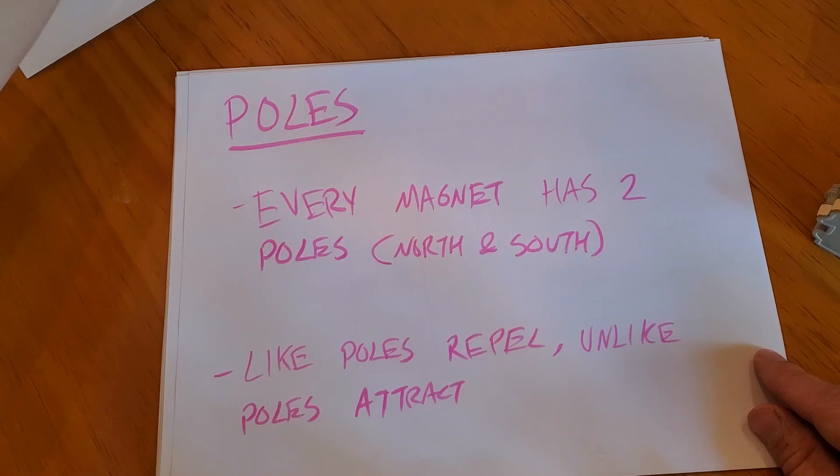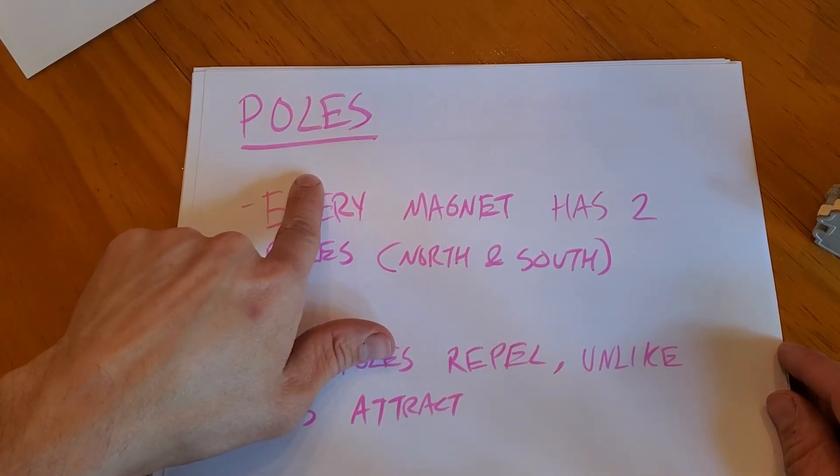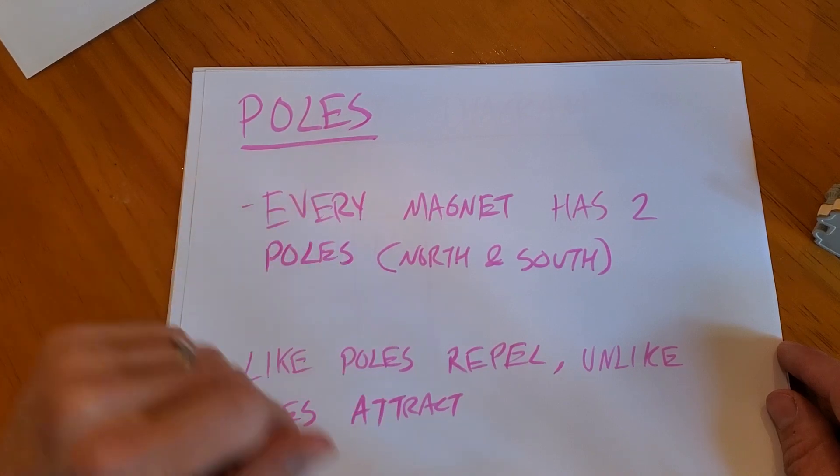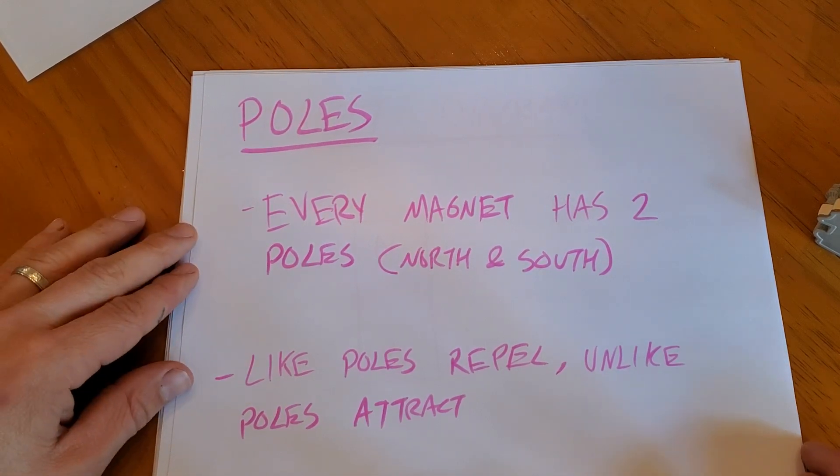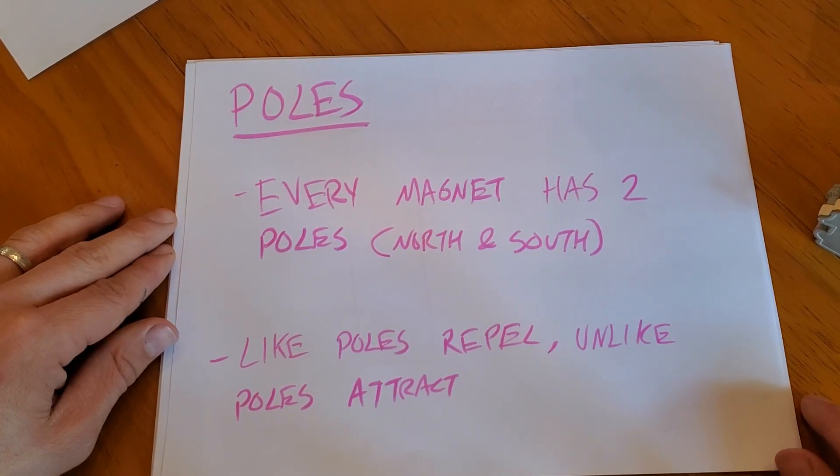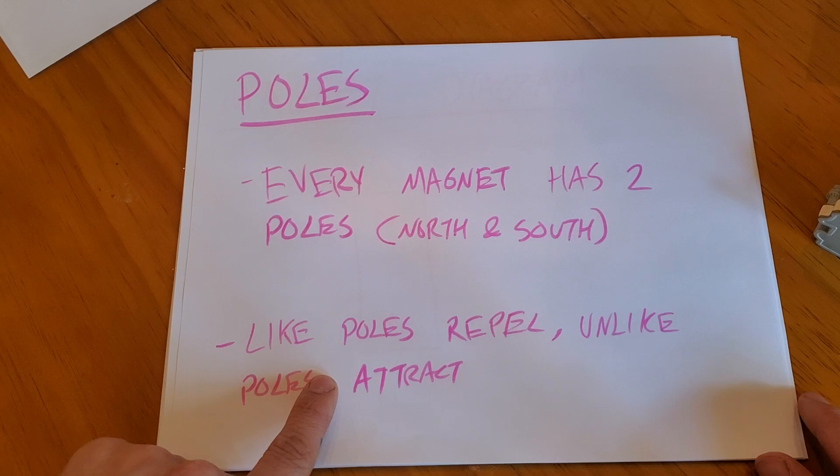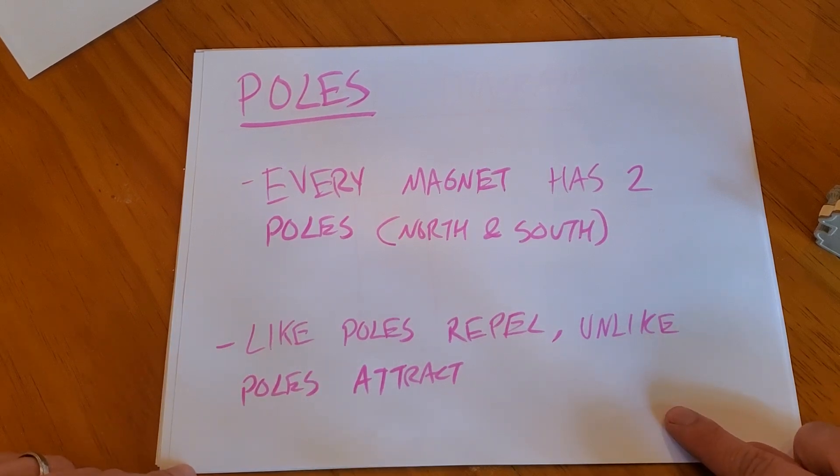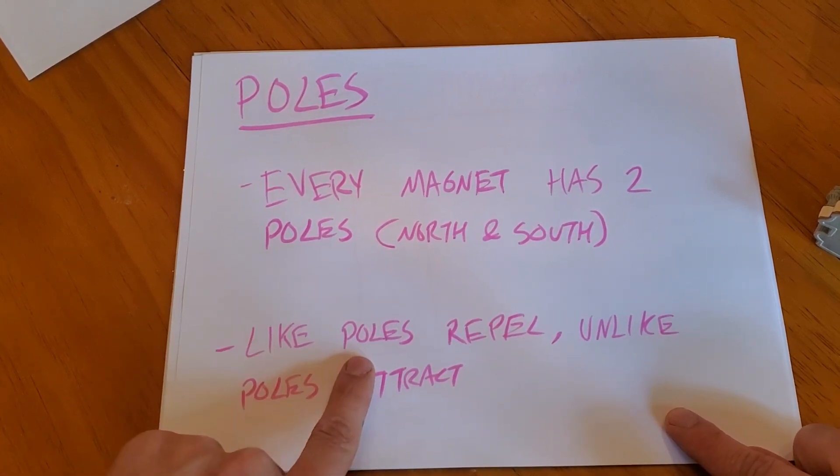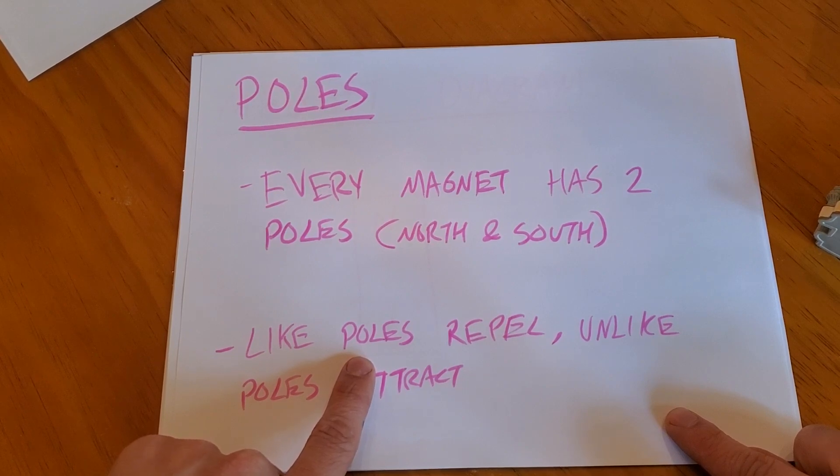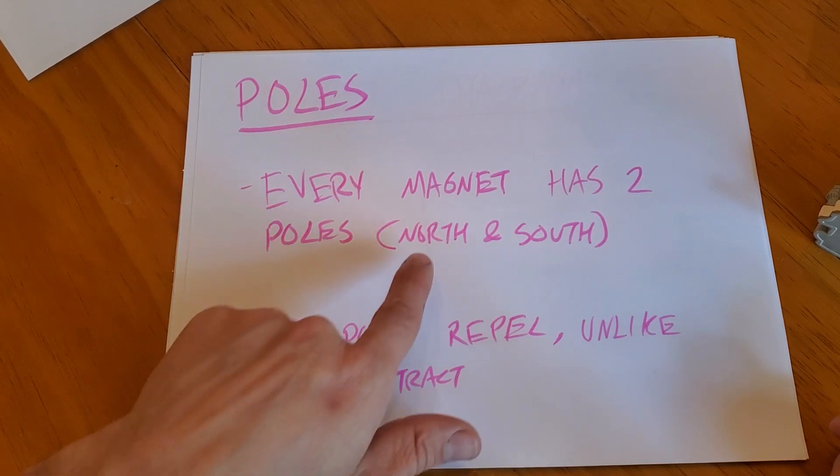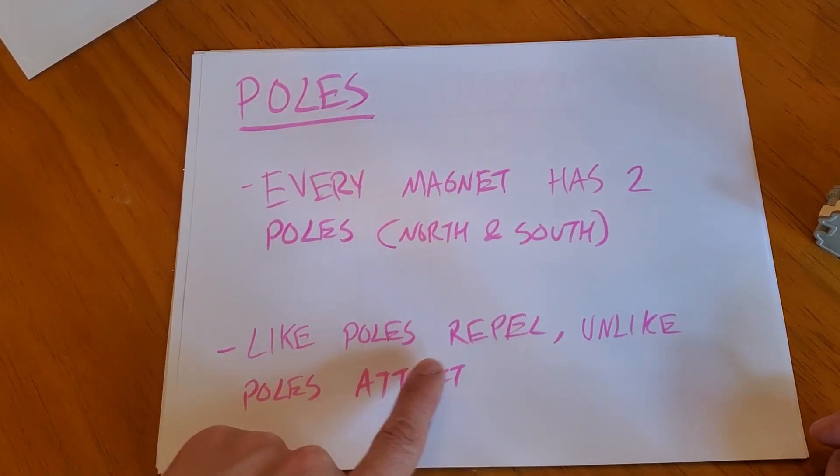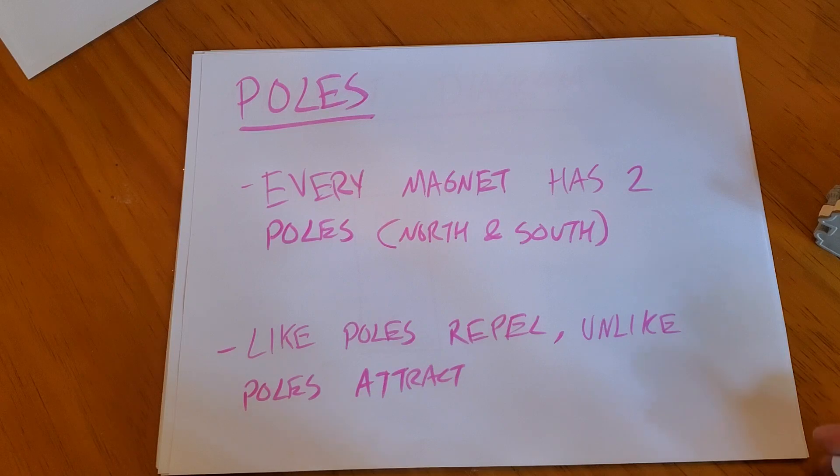Let's talk about what a magnet is and what makes it a magnet. Magnets have poles, like the poles of the earth, north pole and south pole. Every magnet has two poles, a north and a south. This is really similar to static and our electricity unit because like poles repel and unlike poles attract. That sounds very similar to like charges repelling, opposite charges attracting. So if you have two norths or two souths, they will repel each other. If you have a north and a south, they will attract each other.